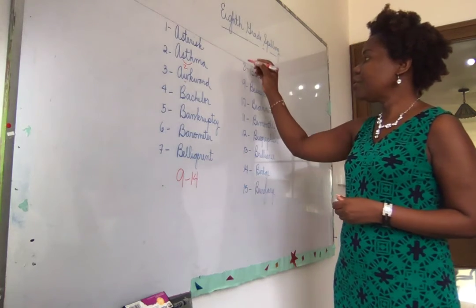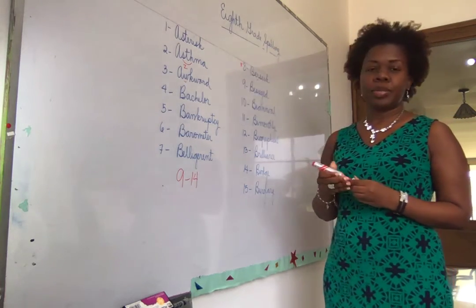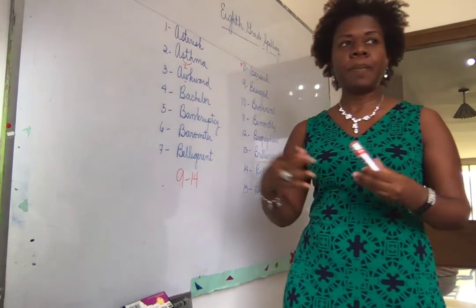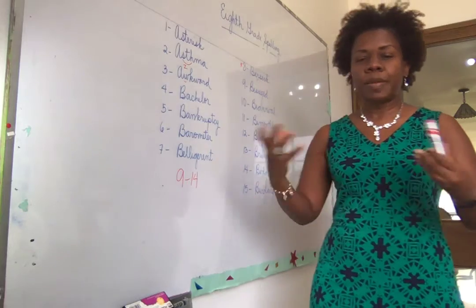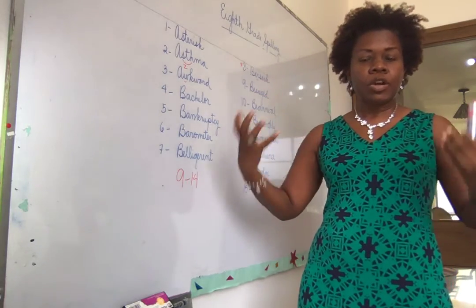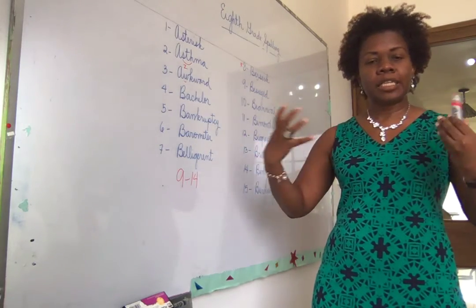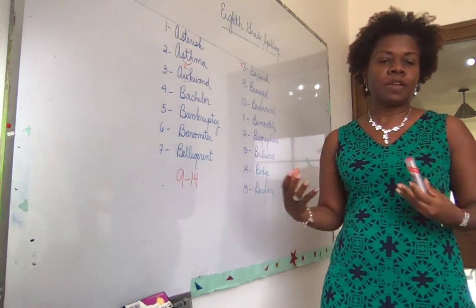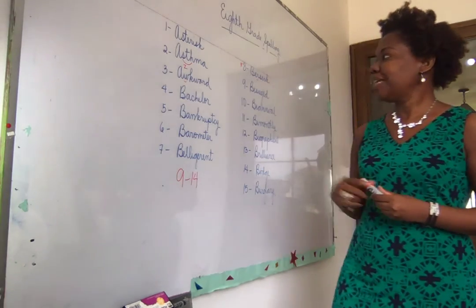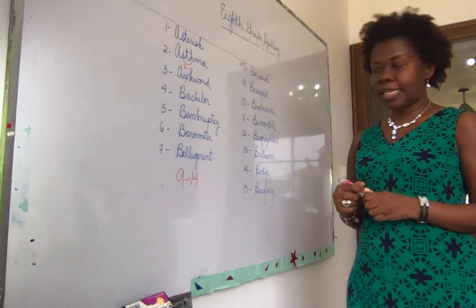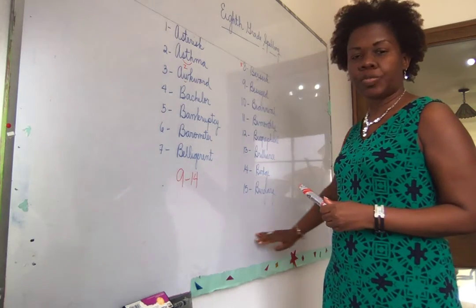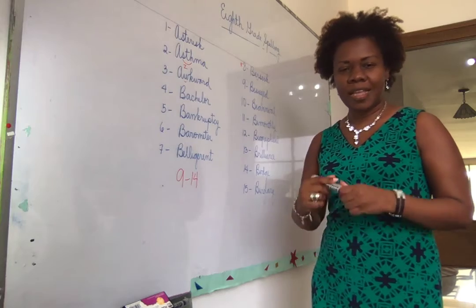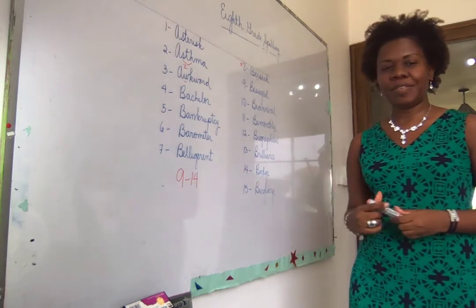The word I have chosen is berserk. Berserk means when something is out of control — when something or someone is acting out of control, acting crazy, just randomly with a lot of energy, doing stuff that they don't usually do. That's the word I'm going to be using in the sentence. I'm going to write my sentence right under here, and at the end we're going to count to see if I made it to between 9 and 14 words.